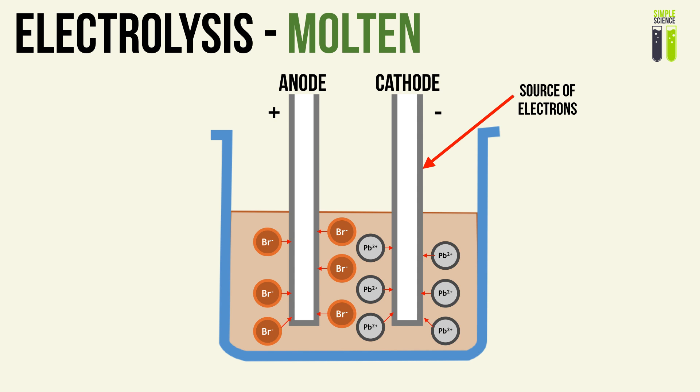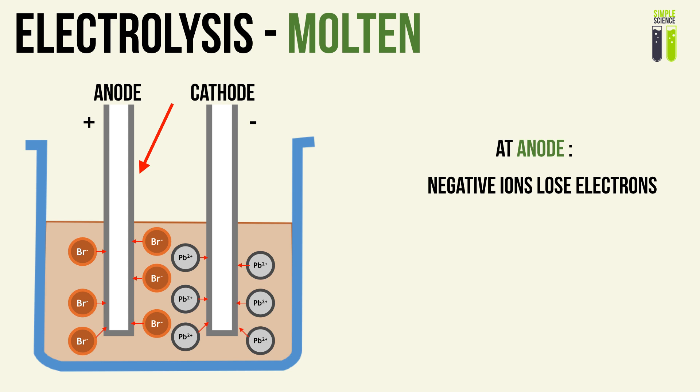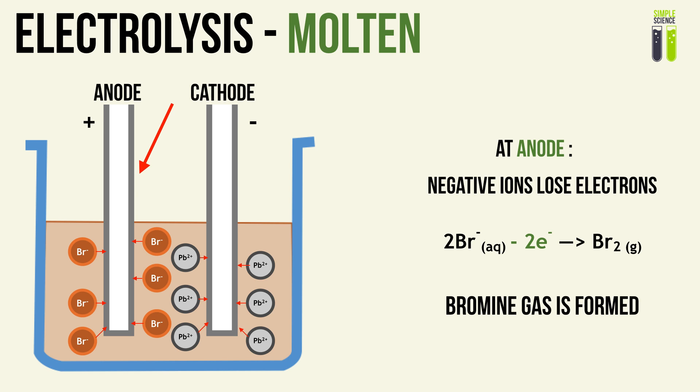The cathode is our source of electrons and is a negative terminal, so at the cathode the positive ions will gain electrons. Our positive ion in this example is Pb²⁺; it will gain two electrons to form a neutral lead atom, so lead metal is formed at the cathode. At the anode, the negative ions lose electrons to form the neutral species. The bromide ions lose a sufficient number of electrons to form bromine atoms. Since bromine exists as a diatomic molecule Br₂, two bromide ions lose two electrons to form two bromine atoms which combine to form Br₂. So bromine gas is formed at the anode.